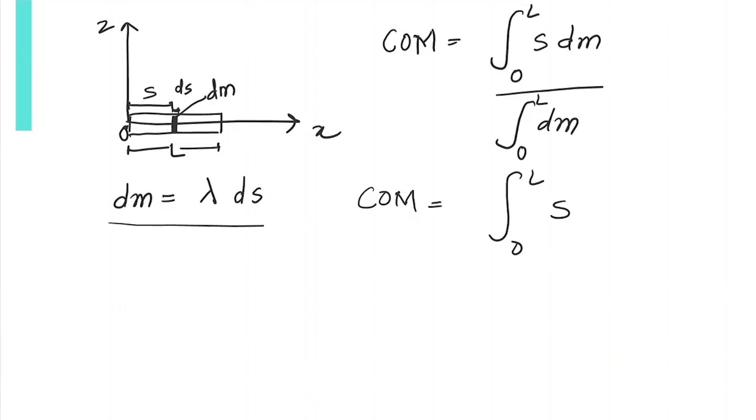We are given λ = λ₀(s/L), so dm becomes λ₀(s/L)ds. We substitute λ₀(s/L)ds in the numerator, and in the denominator we're integrating dm, so we put the expression for dm.